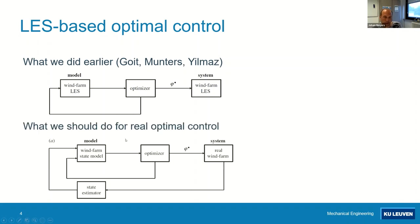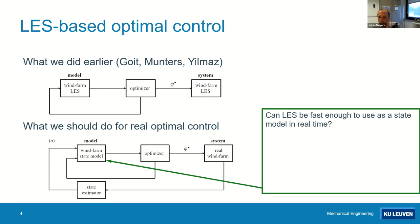What you really should do if you think about real control is you have a real wind farm. You should obviously estimate the state in some kind of way. Starting from that state, you have a state model that allows you to optimize the control for the current time or for the foreseeable future, and that is what you feed into the wind farm. So you basically get a feedback system. And the question then is: can LES as a model be fast enough to implement this in real time?